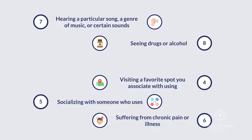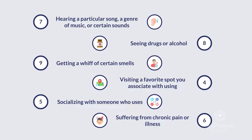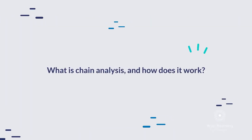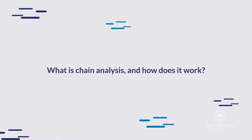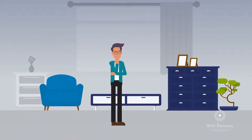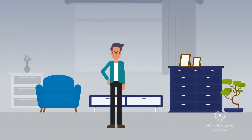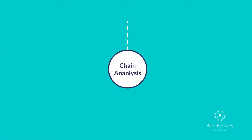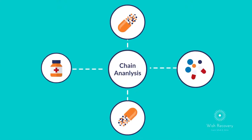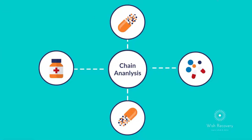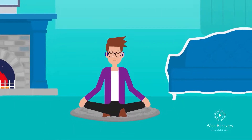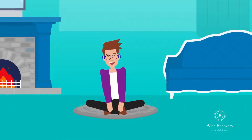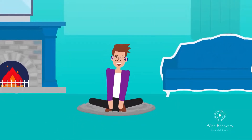8. Seeing drugs or alcohol. 9. Getting a whiff of certain smells. So, what is chain analysis and how does it work? It is a method used to understand the purpose of a specific behavior. A chain analysis of a problem behavior aims to find all the variables that lead to it. Once you find out all the contributing factors, it can help you understand how to modify your behavior.